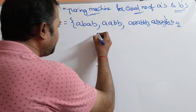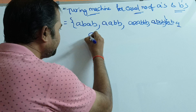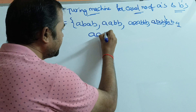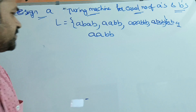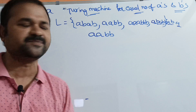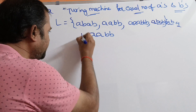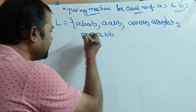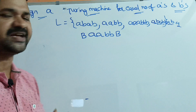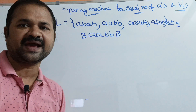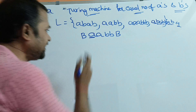Let us see. First, let's see the logic here. Let's say we have a string like A, A, B, B. Before the string, we can have a number of blank spaces. After the string, we can have a number of blank spaces. Initially, the read-write head is at A.